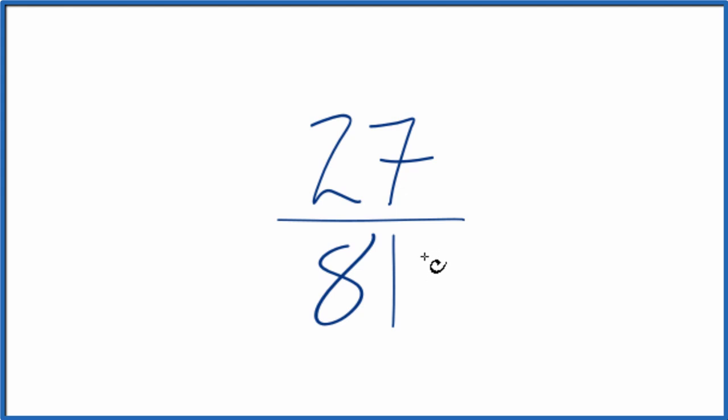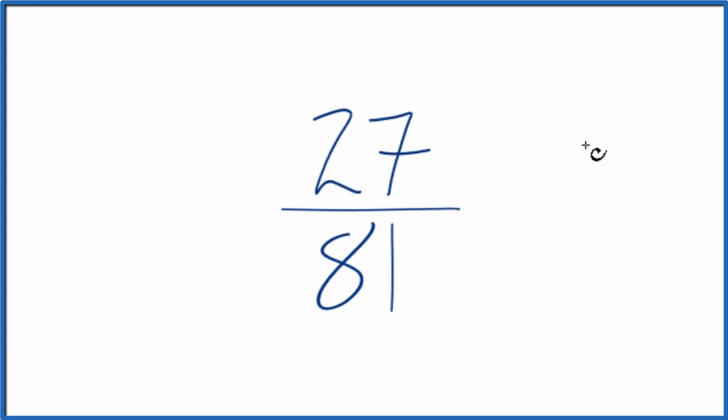To do that, we need to find a factor, a common factor, something that goes into 27 and 81 evenly, called the greatest common factor. So here's the factors for 27 and 81.